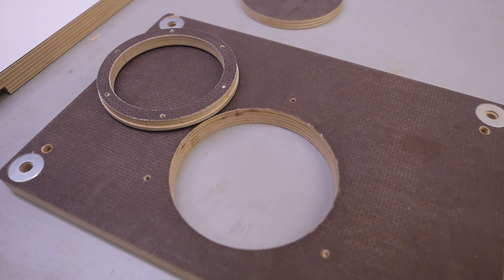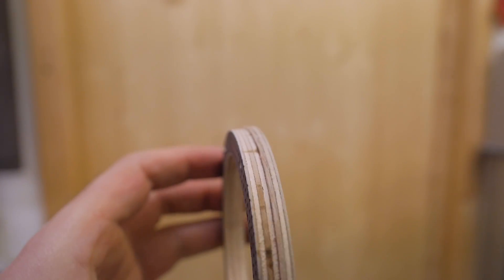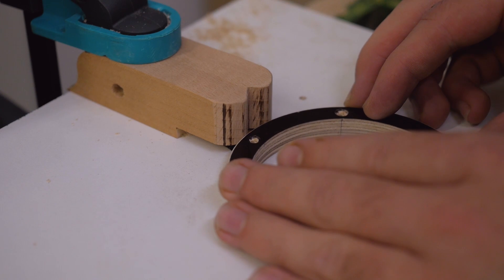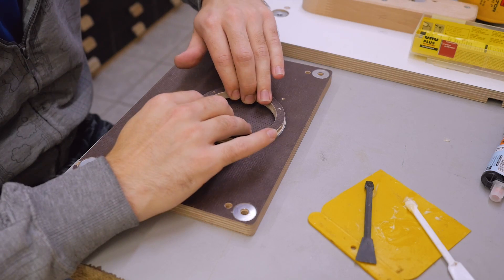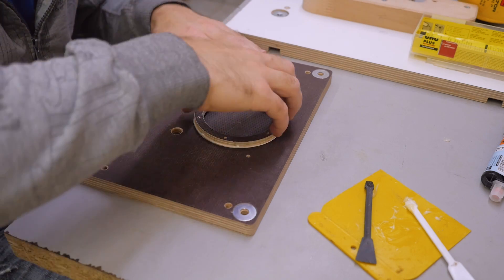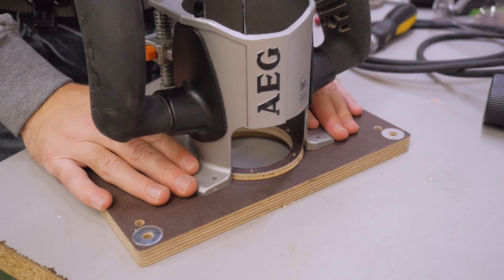I managed to get the ring out again and sanded off a little bit of the glue. And then I routed a rabbet on the edge of the ring. That's how I wanted that.